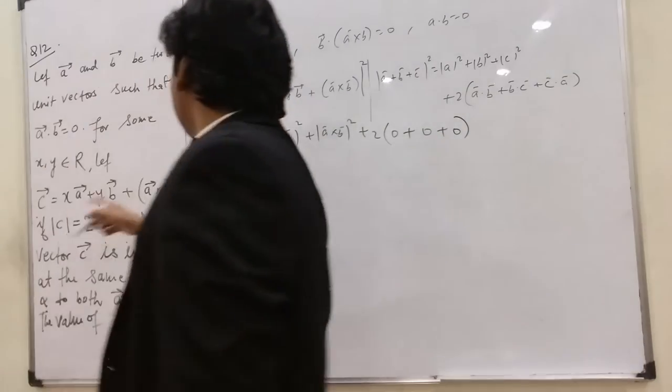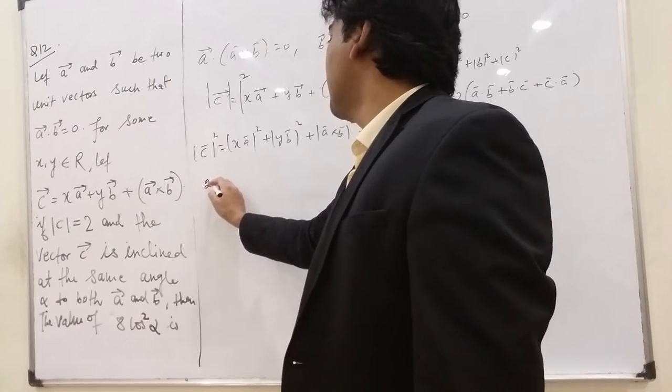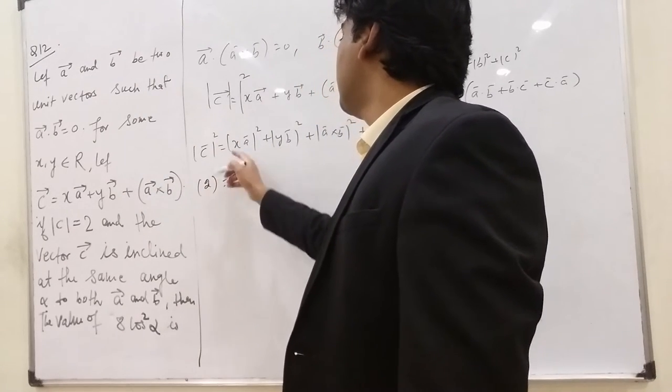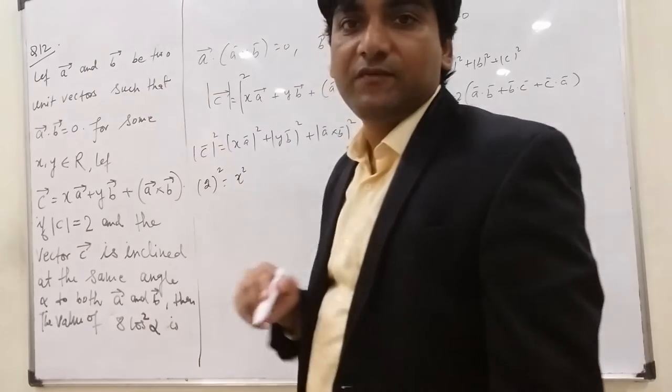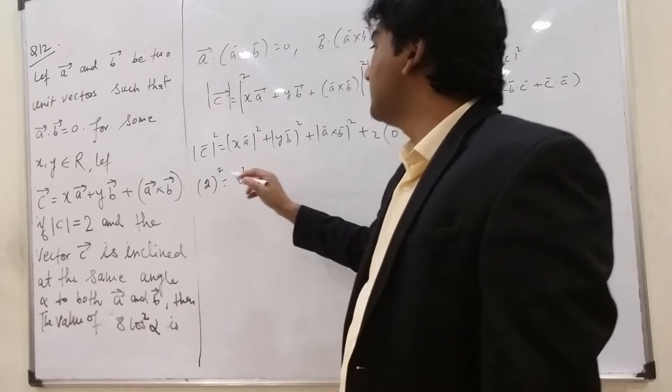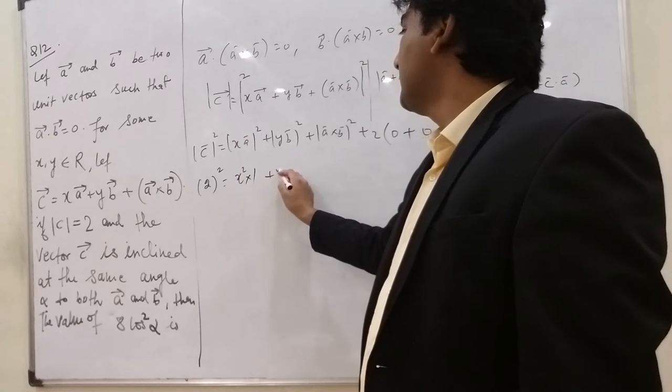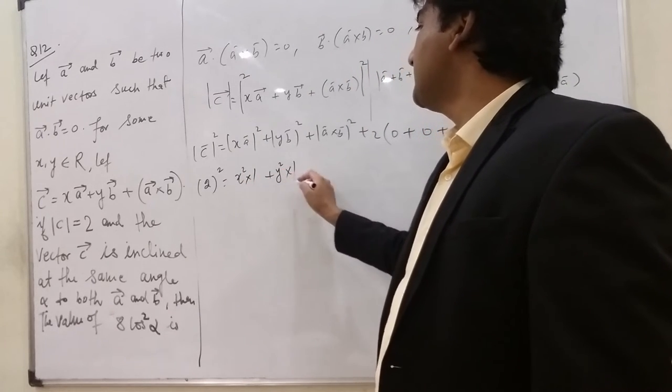So mod C is 2. So this is 2 square, which is 4. This is x square. And A and B are the two unit vectors. So magnitude of A is also 1, so this is times 1. Y square, B is also a unit vector, so 1.